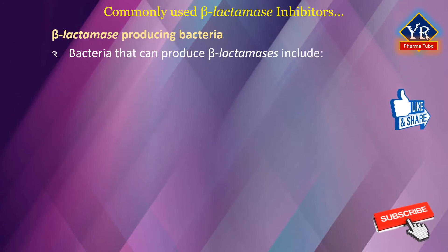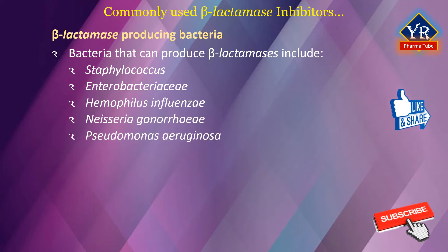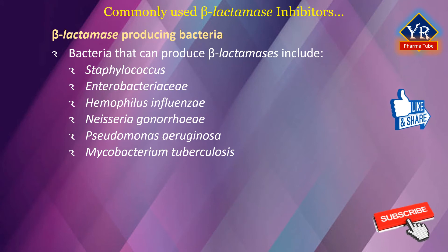Beta-lactamase producing bacteria include but are not limited to Staphylococcus, Enterobacteriaceae, Haemophilus influenzae, Neisseria gonorrhoeae, Pseudomonas aeruginosa, and Mycobacterium tuberculosis. The majority of gram-negative bacteria, Staphylococci, Enterobacteriaceae, and even Mycobacteria produce beta-lactamases, while Streptococci, Pneumonococci, and most Enterococci do not. As they can be encoded chromosomally or by plasmids, wide distribution of resistance ensues. Beta-lactamases produced by anaerobes, particularly from Bacteroides and Fusobacterium species, are also susceptible.